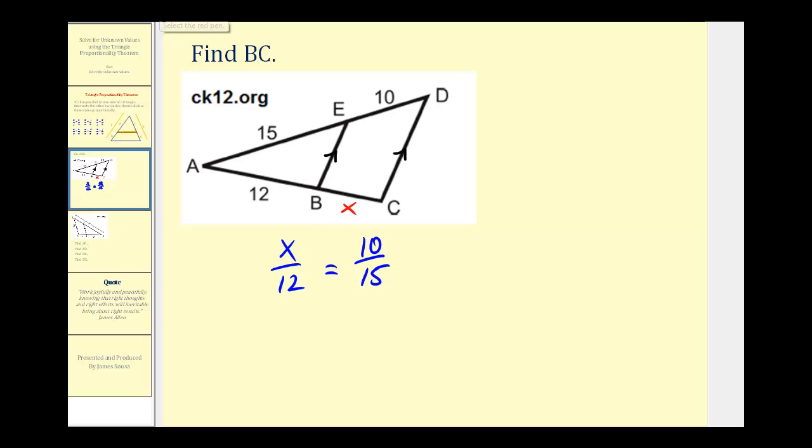So now to solve for X, we can cross-multiply. 15 times X would be 15X must equal 12 times 10, that's 120. Now we'll divide both sides by 15. So we have X equals 120 divided by 15 equals eight. So the length of BC is equal to eight units.